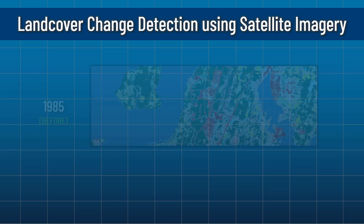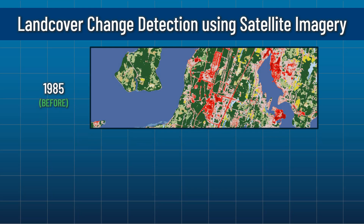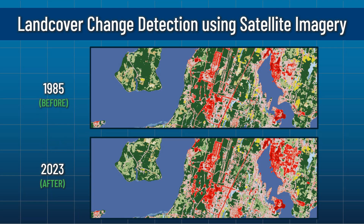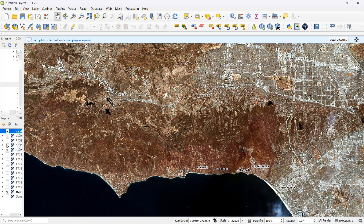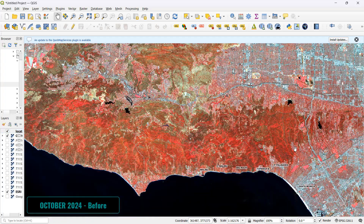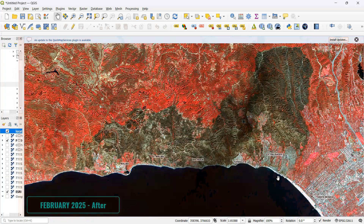In this video, I'm going to show you how to do a land cover change detection exercise using satellite imagery. Depending on the temporal scale you're looking at, as well as the elements of change that you're interested in, you might have to approach this exercise in slightly different ways — starting from obtaining the data, the way you would do this analysis, and how you would eventually present your results.